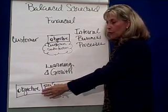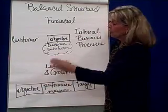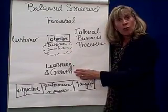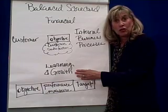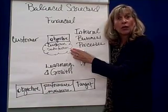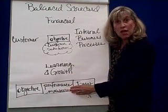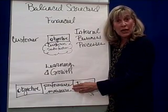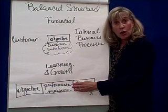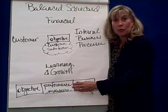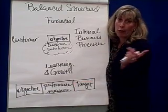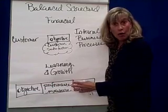For example, in learning and growth, we would set up an objective. If the overall company says it wants customer satisfaction, then in learning and growth we also want employee satisfaction and delight. A performance measure might be something like the number of training hours or how many different duties the employees are cross-trained on — in other words, can they pitch in if a customer comes in with a problem, rather than saying 'it's not my problem, go see Joe over there.' So it might be cross-training.